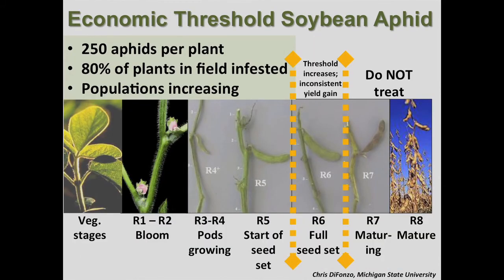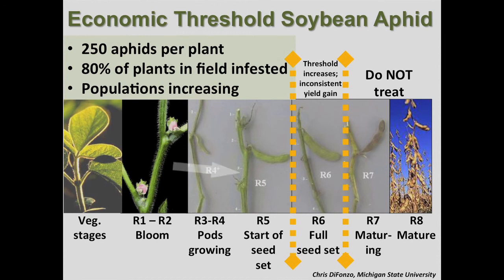For sampling, begin when the crop is in the late vegetative stage — typically in North Dakota that's mid to late June. Then continue sampling all the way through R5, which is early seed set. Aphids can occur in hot spots, but treatment decisions should be based on a broad sample of randomly selected plants.